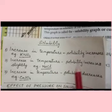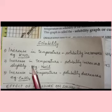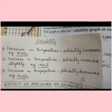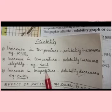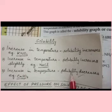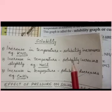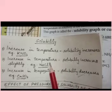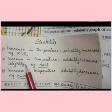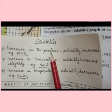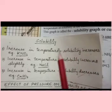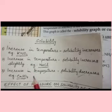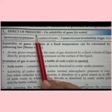The solubility of calcium sulfate decreases when we increase the temperature. So on increasing temperature, the solubility of calcium sulfate decreases. A question may ask: name the substance whose solubility decreases with increase in temperature — that is calcium sulfate. Name the substance whose solubility increases with increase in temperature — that is potassium nitrate. In your syllabus, only the solubility of these three substances needs to be learned.